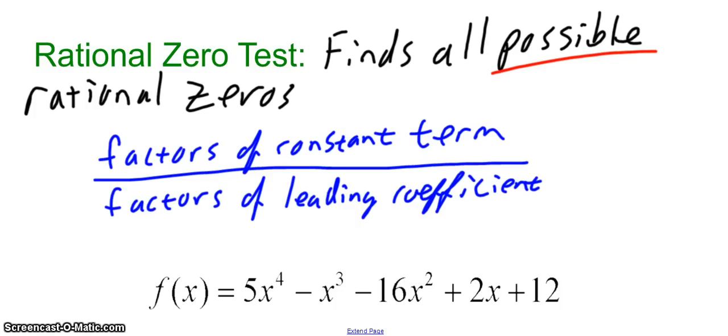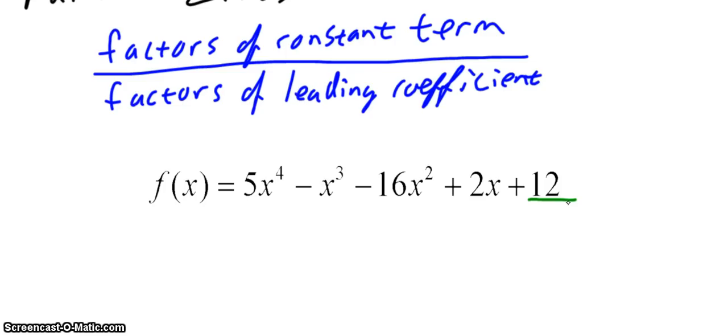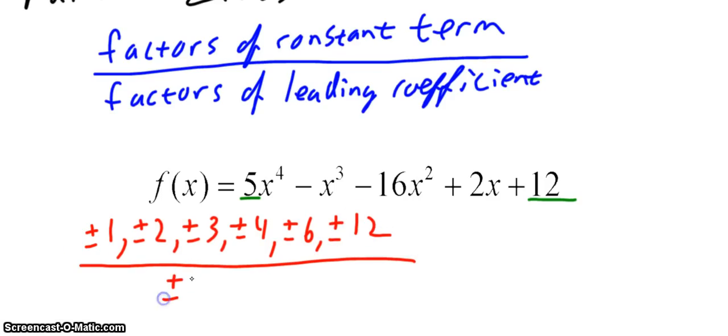What are the possible values? They are the factors of the constant term divided by the factors of the leading coefficient. What does that mean, right? Well, if I look at this polynomial function here, that's the constant term. Why is it the constant term? Because it doesn't have a variable with it. Makes sense. That's the leading coefficient. So what are all of the factors of 12? Well, 1, 2, 3, 4, 6, 12. So plus or minus 1, because negative 1 is also a factor of 12, if 1 is a factor. Plus or minus 2, plus or minus 3, plus or minus 4, plus or minus 6, plus or minus 12, divided by plus or minus 1, plus or minus 5.